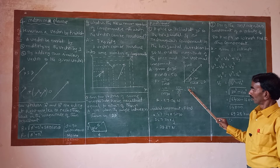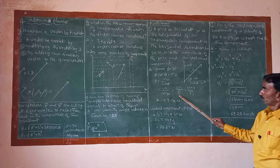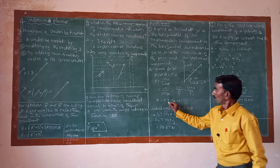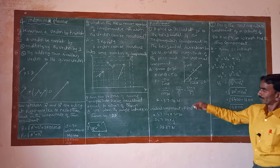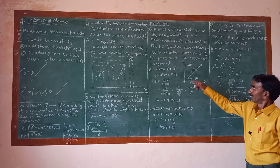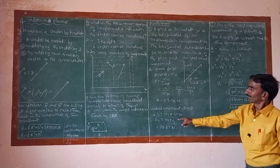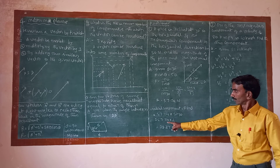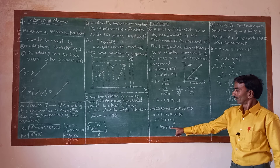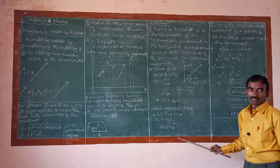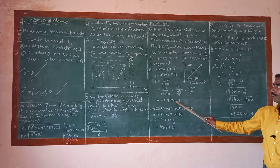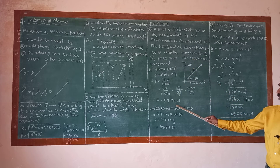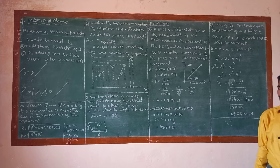Cos 30 is root 3 over 2. So F equals 50 into 2 over root 3, which equals 57.74 N. The vertical component is F sin theta, that is 57.74 into sin 30, which equals 57.74 into 1 over 2, giving 28.37 N.